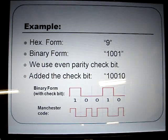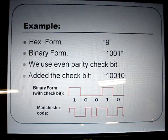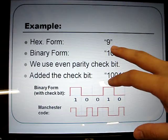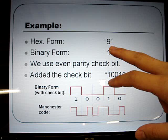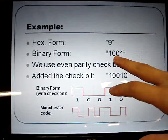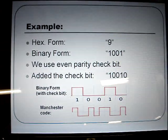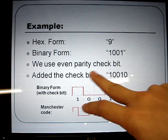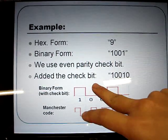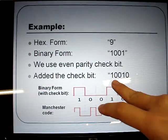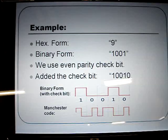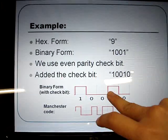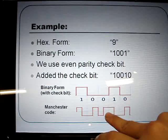Now I'm going to talk about an example. If we have the hexadecimal value 9, its binary form is 1001. In our project, we use even parity check bit. After adding the check bit, the binary form is 10010. This is the binary form and this is the Manchester code.